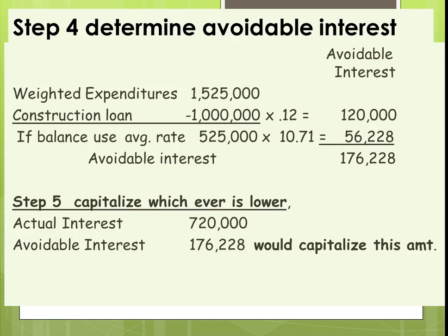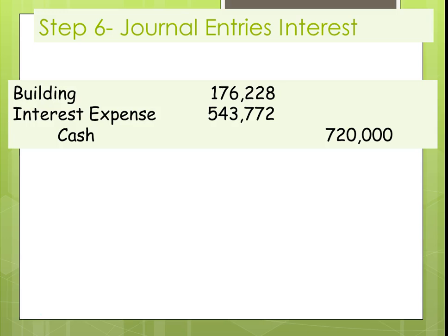Now we can do our journal entry. The building account is debited $176,228, and the balance goes to interest expense. This is how you determine how much interest to capitalize when constructing a building or piece of equipment that requires borrowed money.